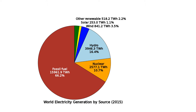As of December 2019, there are 443 civilian fission reactors in the world with a combined electrical capacity of 395 gigawatts, and there are also 56 nuclear reactors under construction and 109 reactors planned, with combined capacities of 60 gigawatts and 120 gigawatts respectively. The United States has the largest fleet of nuclear reactors, generating over 800 terawatt zero-emission electricity per year with an average capacity factor of 92%. Most reactors under construction are Generation 3 reactors in Asia.